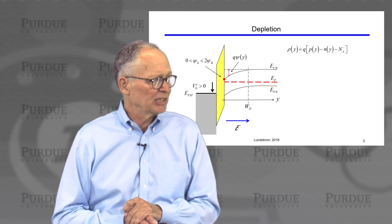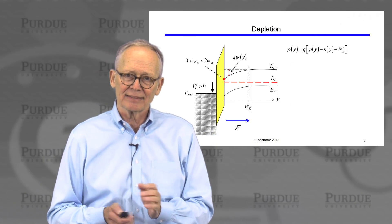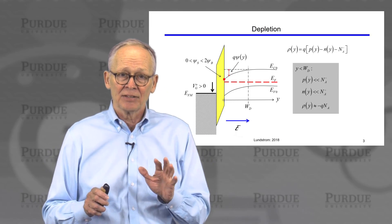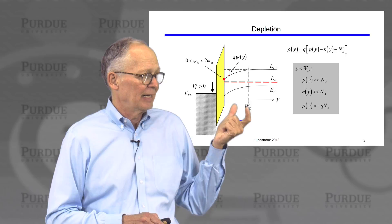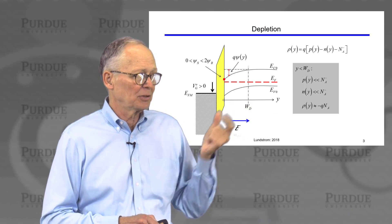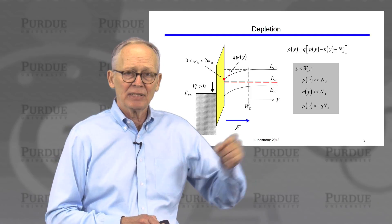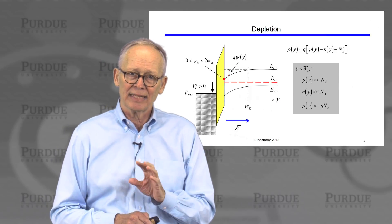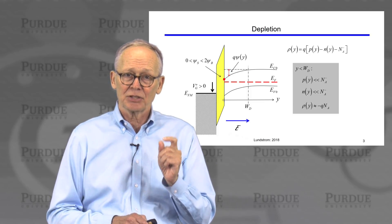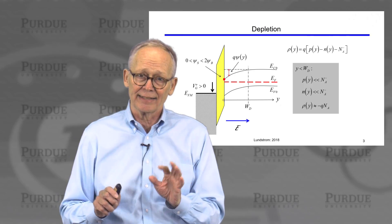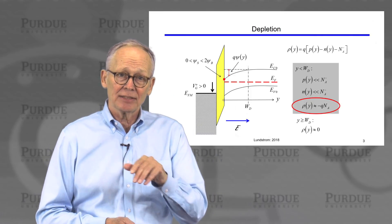We need the space charge density in the Poisson equation. In general it depends on mobile holes, mobile electrons, and the ionized dopant density. This is a P-type semiconductor, so we have P-type dopants. The depletion approximation assumes that within the depletion region — where Y is less than W_D — the number of holes is negligible compared to the doping density. The number of electrons is also negligible because we haven't bent the conduction band down far enough to invert the semiconductor. So the space charge density is simply minus Q times the doping density, assuming all dopants are fully ionized. Outside the depletion region, it's zero.